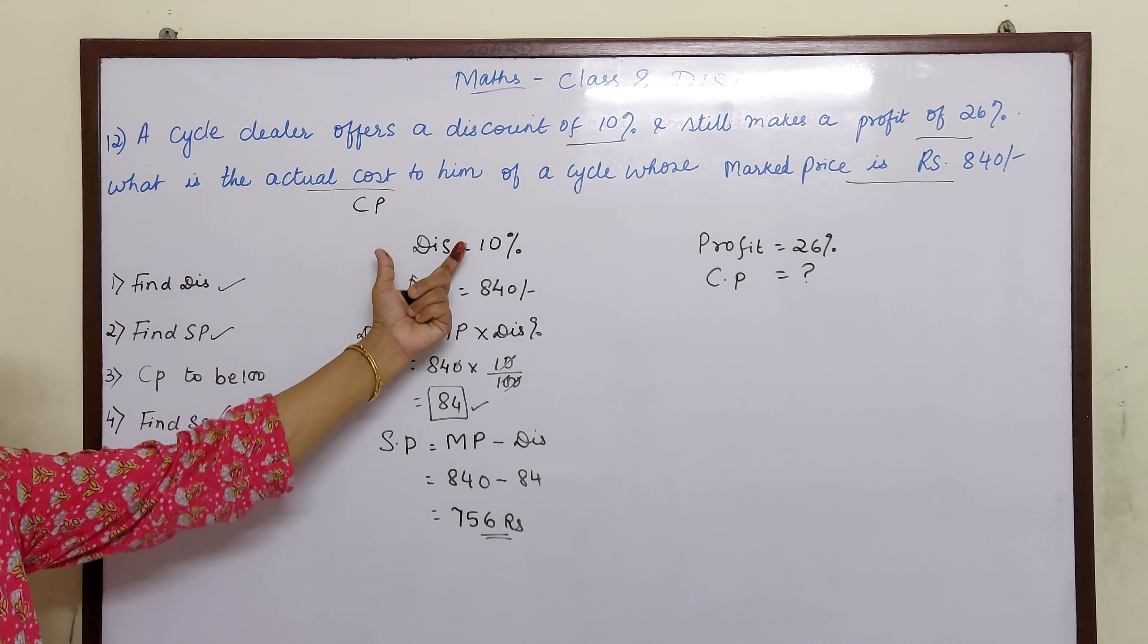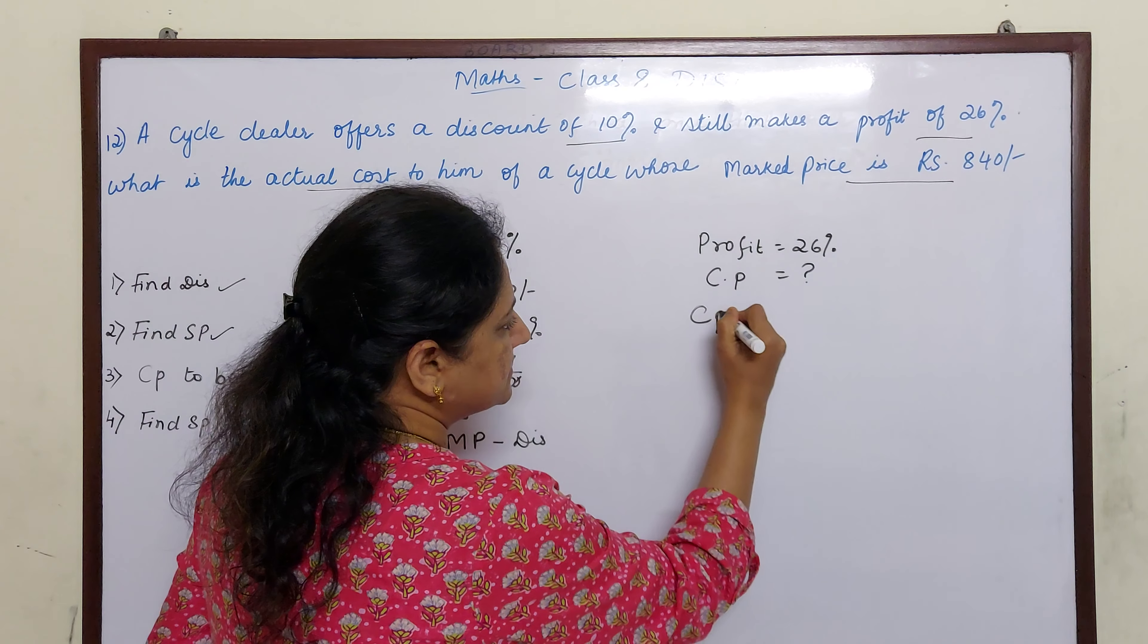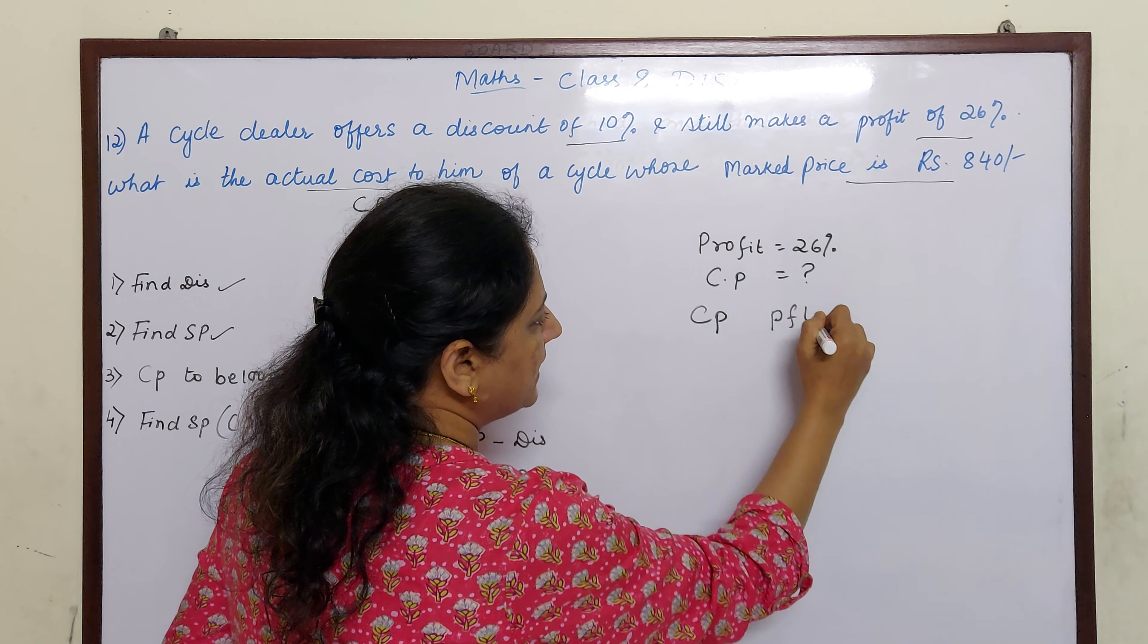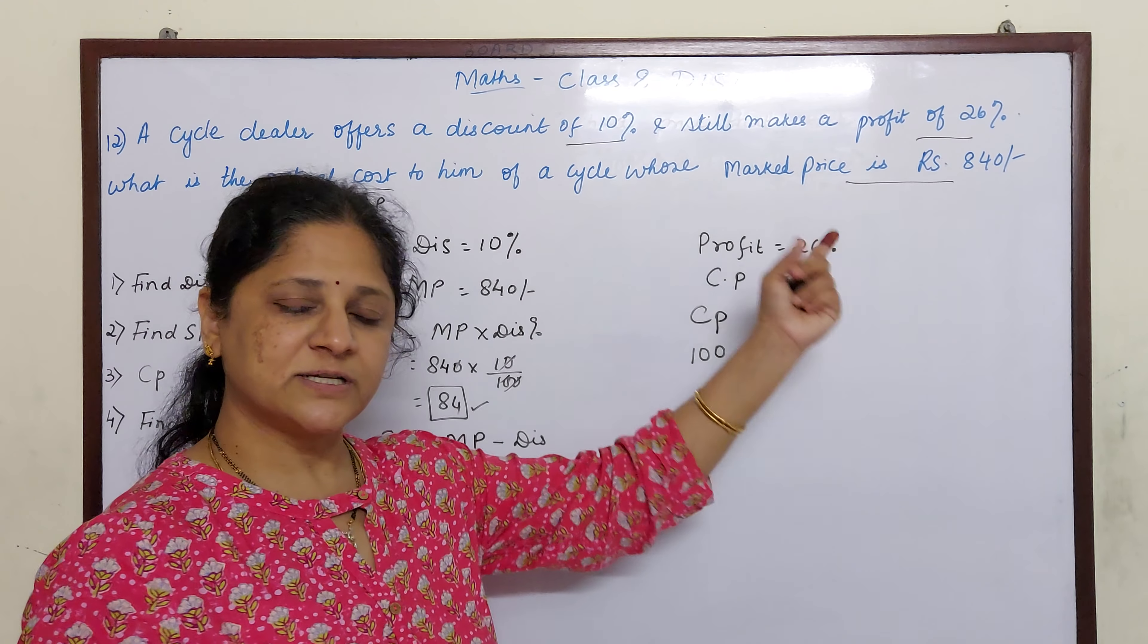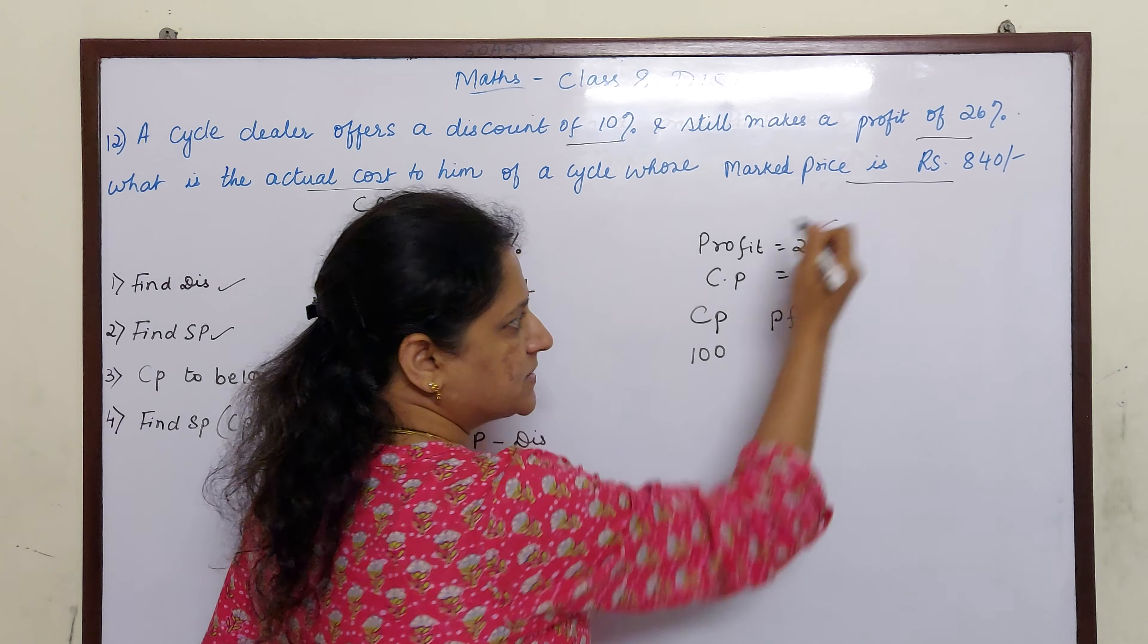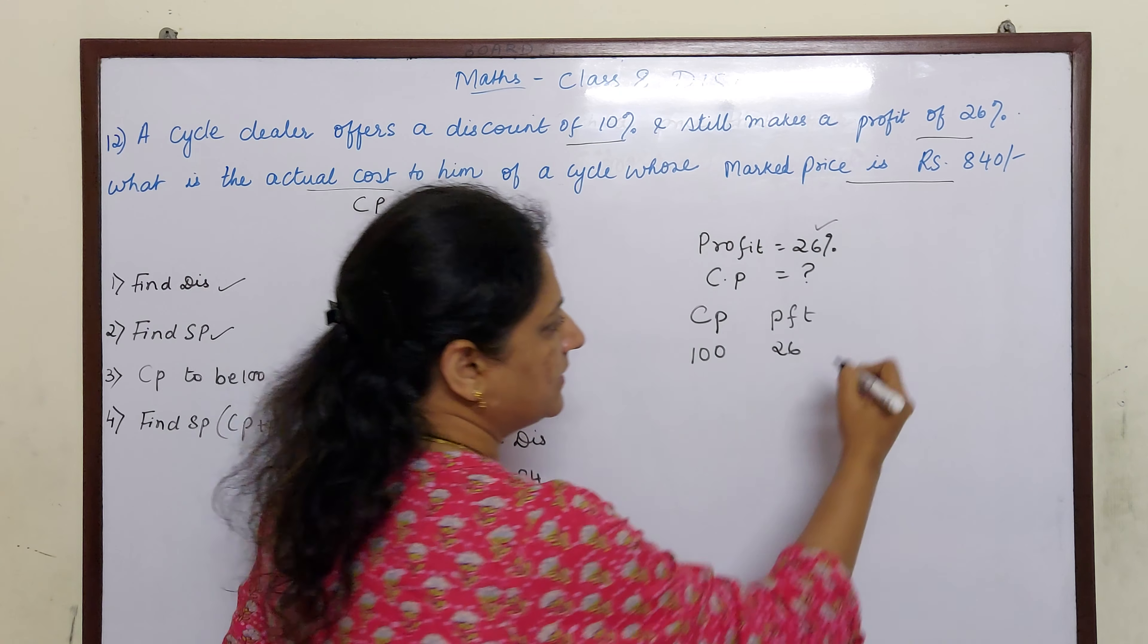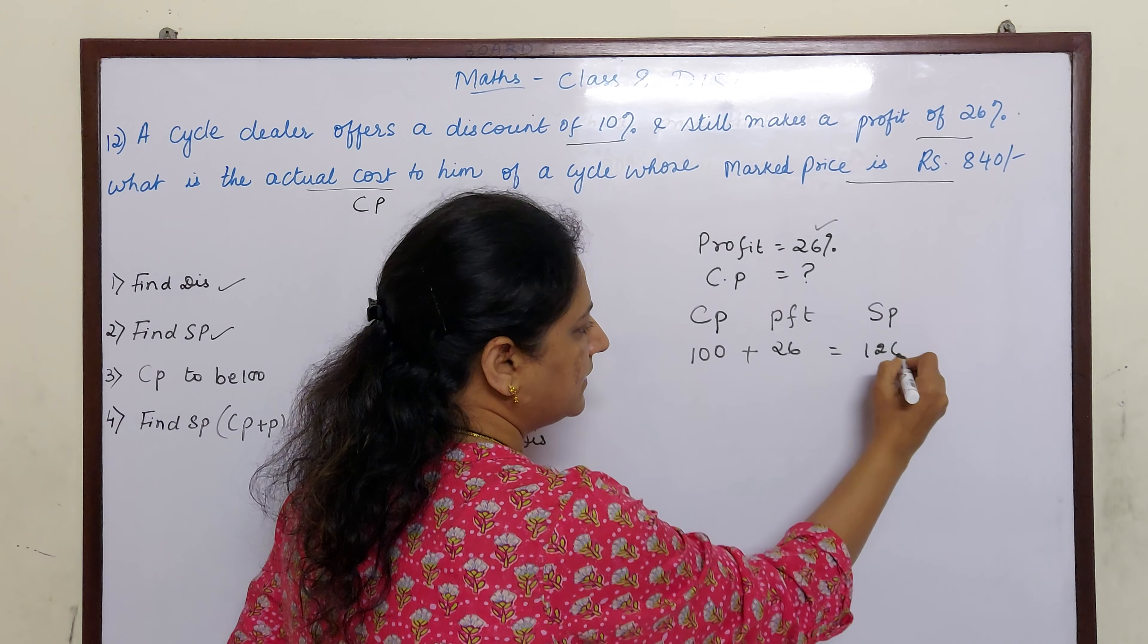If I assume cost price to be 100 children, what will be the profit? We have already learned whatever is the percentage, that only will be profit if you take cost price as 100, right. So if profit percent is 26 percent then profit will be 26. And how do we get selling price? 100 plus 26, we will get 126.